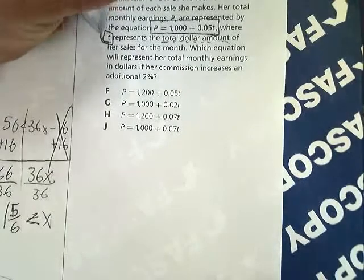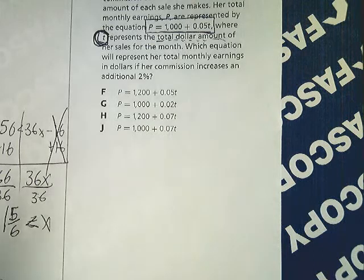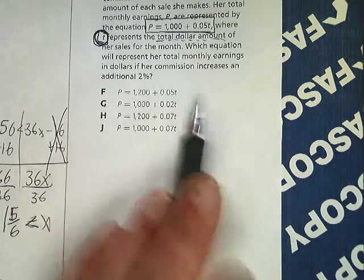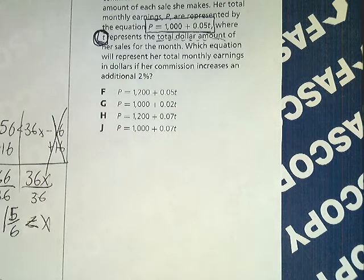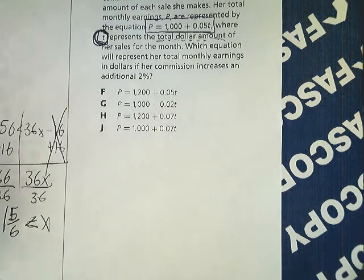Make a note of what all the variables are if you can. It wants to know which equation will represent her total monthly earnings in dollars if her commission increases an additional 2%. Now, like we said, commission doesn't have anything to do with her monthly payment. She could sell nothing and still get $1,000 a month. So that number is not going to change.